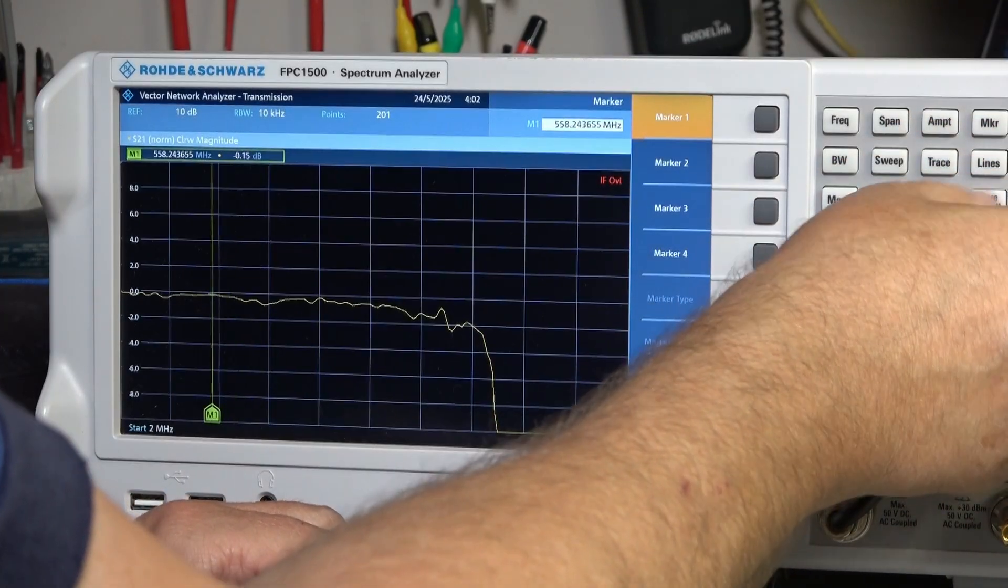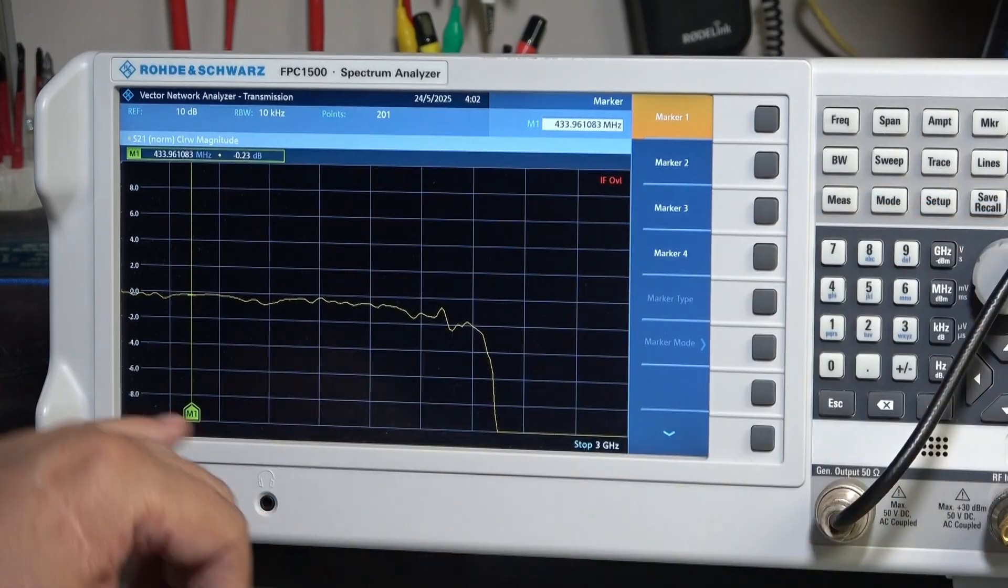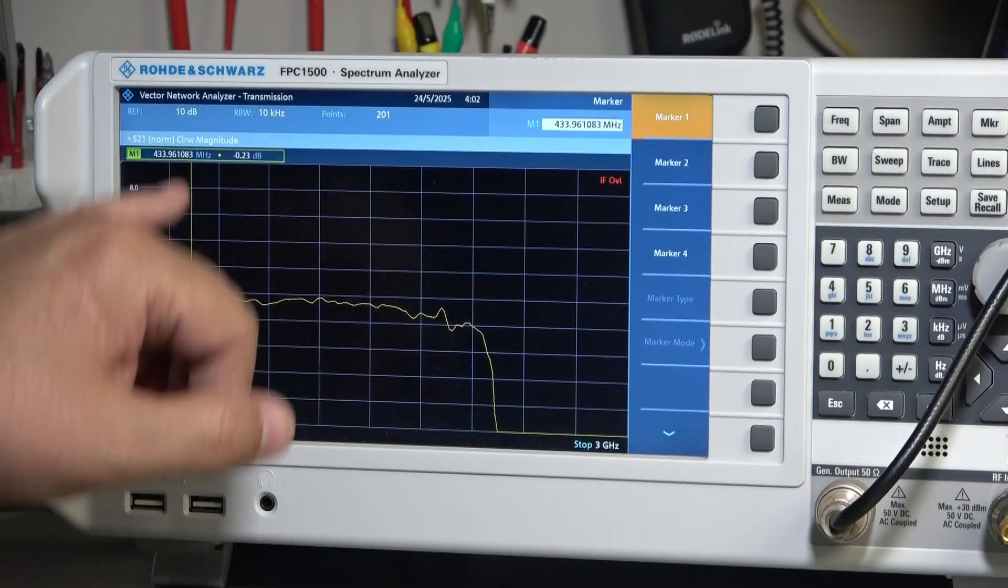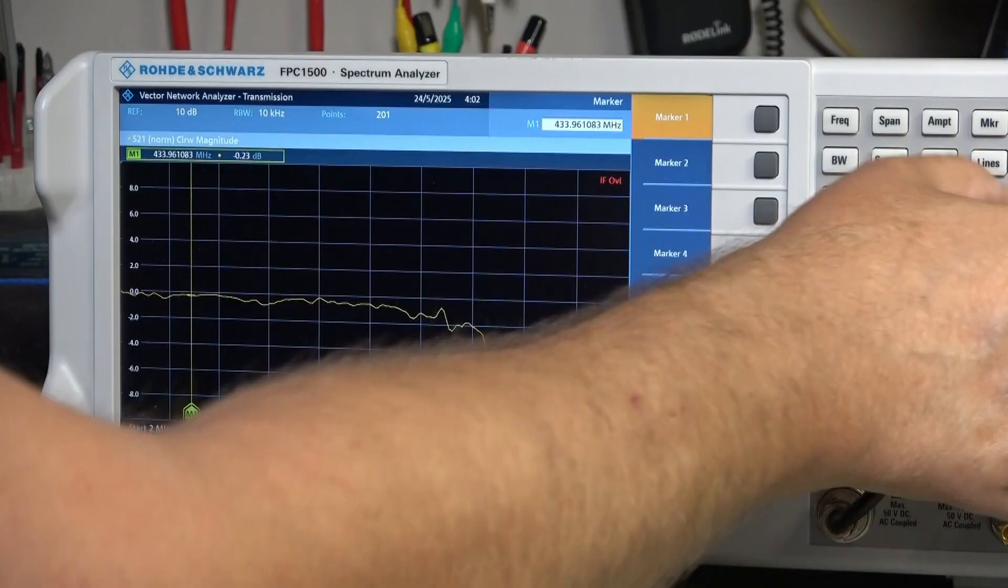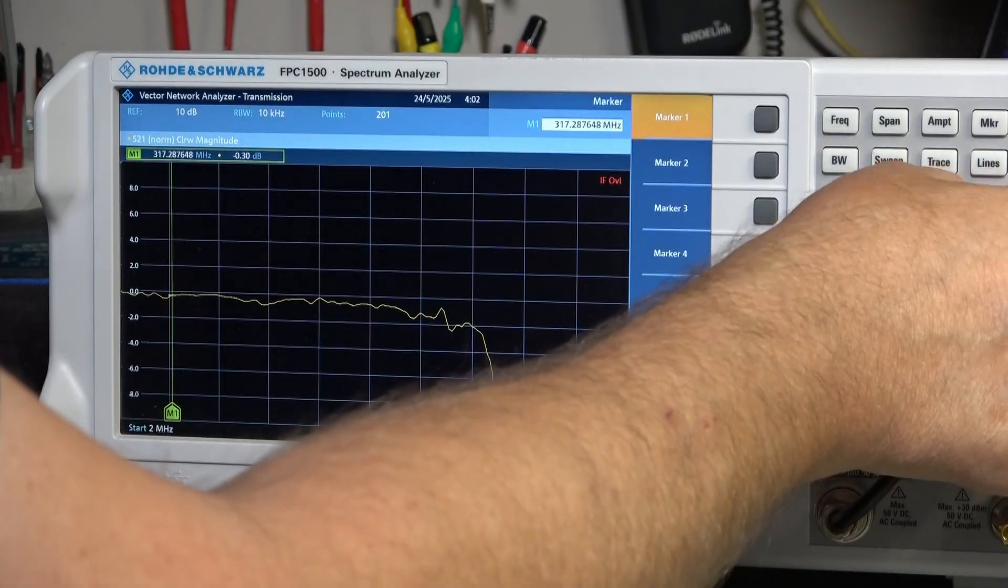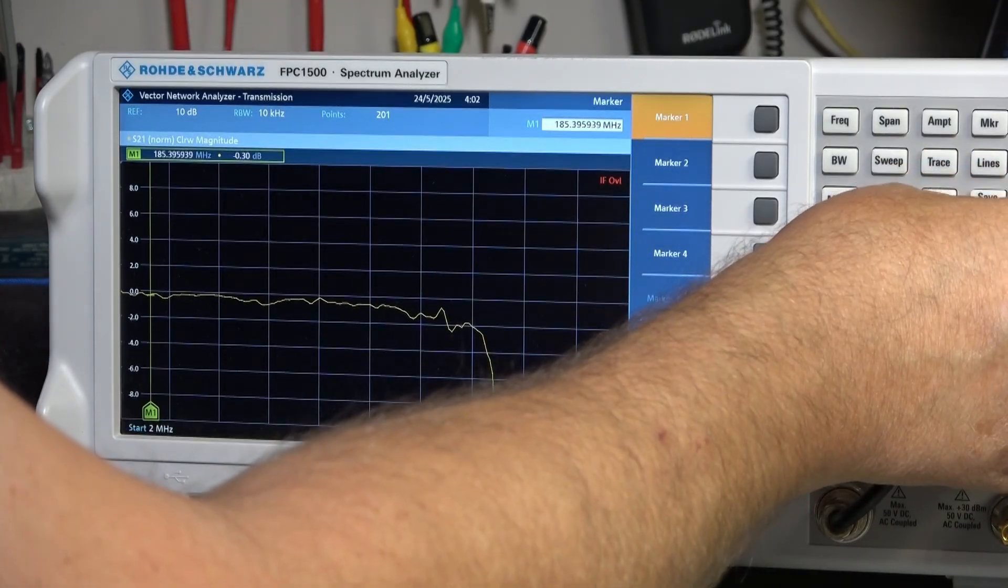Now I have noticed the IF overload warning is showing, so I'm going to need to reduce the VNA output level before I do fuller characterization. I might find the response improves then, but it is pretty good and fine for now.